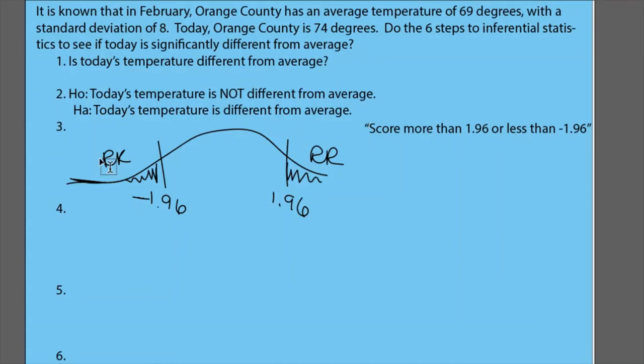We're halfway there. We have defined our research question, we've done our null and alternative hypotheses, and now we've defined our rejection region. Now it's time to do some math. For step four we're actually going to calculate what our z-score is. I'm going to use the numbers from the prompt up above. Remember our formula is z equals your score minus the μ divided by the standard deviation. My score is really going to be today's temperature. Looking up at the prompt above, which number do you think is going to be my score?